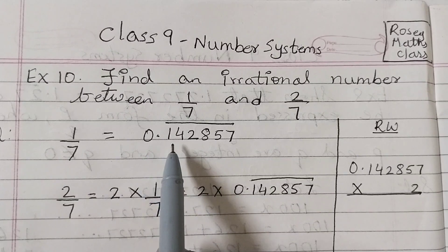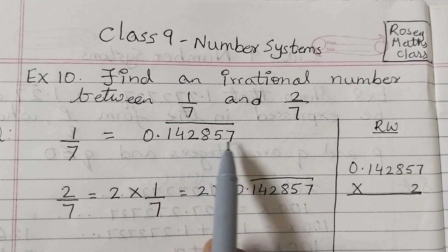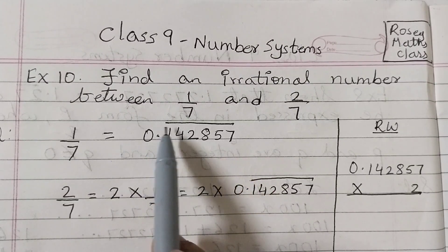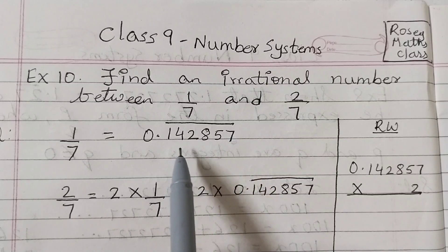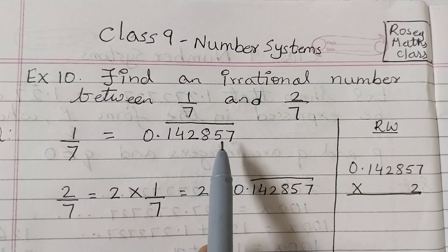0.142857 and the bar is on top of all these six digits because this block is repeating itself. It's a non-terminating repeating number.